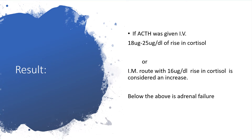The expected results are: if ACTH was given intravenously, we expect about 18 to 25 micrograms per dL rise in cortisol level. If the ACTH was administered via the intramuscular route, we expect about 16 micrograms per dL rise in cortisol level. If we achieve those parameters, we consider cortisol to have increased appreciably. Below those levels indicates adrenal failure.